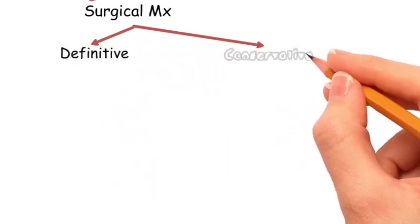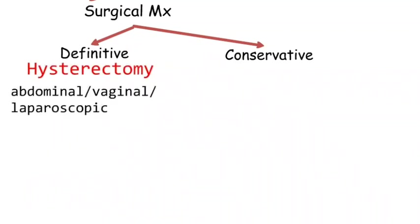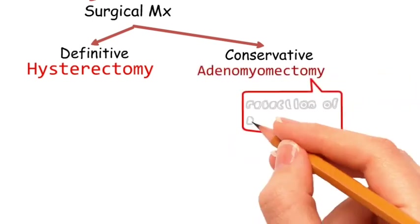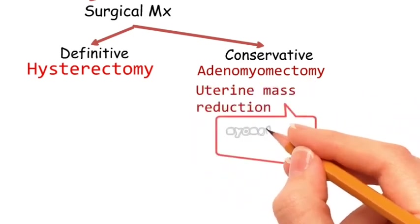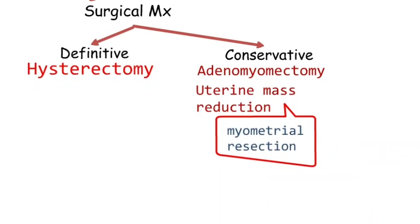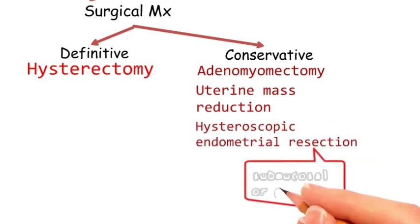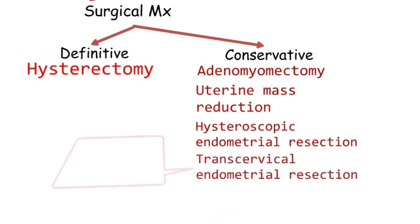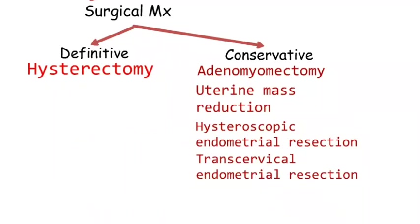Surgical management includes definitive and conservative management. Definitive management is by hysterectomy, which may be abdominal, vaginal, or laparoscopic. Conservative management includes adenomyomectomy, which is resection of adenomyoma; uterine mass reduction or myometrial resection, done in case of diffuse adenomyosis; hysteroscopic endometrial resection, done in case of submucosal or polypoid adenomyosis; and transcervical endometrial resection, done as a treatment of abnormal uterine bleeding.